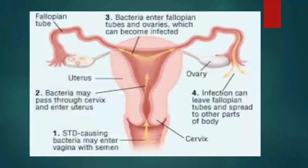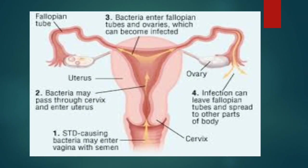In this image, you can see that due to an STD, bacteria enter through the vagina and reach the uterus through the cervix. As the bacteria pass through the cervix, they infect the fallopian tube and ovaries, leading to inflammation of the fallopian tube and ovaries. Later, the infection can spread to nearby organs.